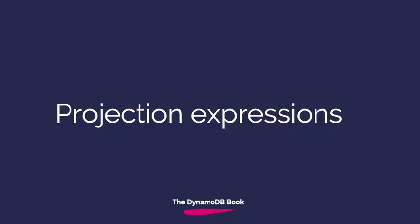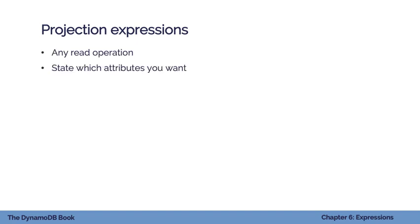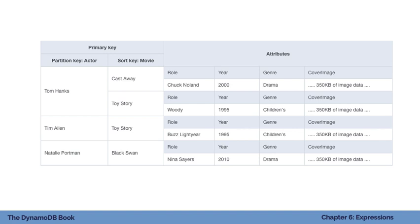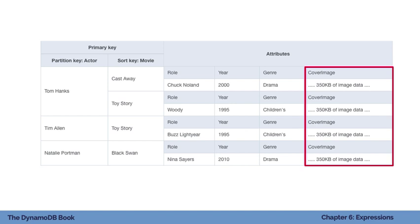The next type of expression is a projection expression, which works on any read operation. With a projection expression, you state which attributes you want returned. If a filter expression removes entire items that don't match, a projection expression removes specific attributes. For example, if you had a cover image stored on a DynamoDB item — a large image blob — and you have access patterns where you don't need it, you can tell DynamoDB to return only role, year, and genre, but not the cover image.